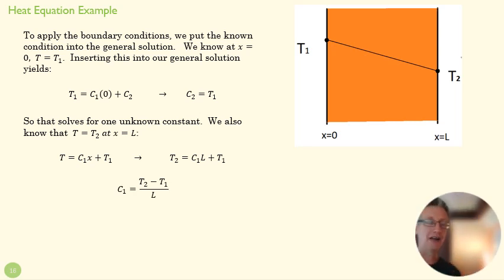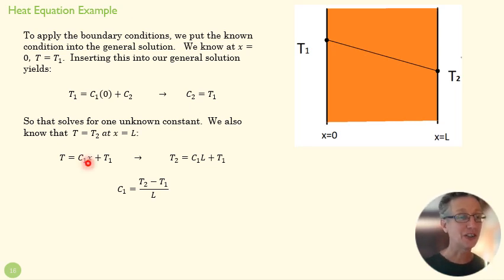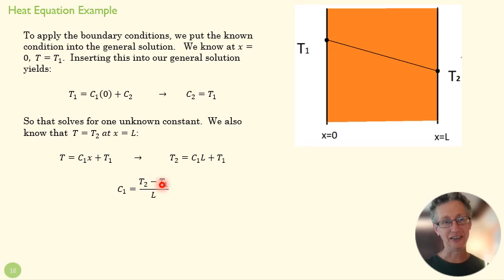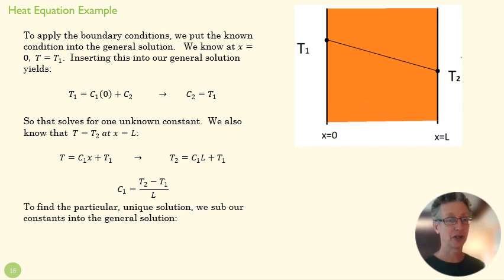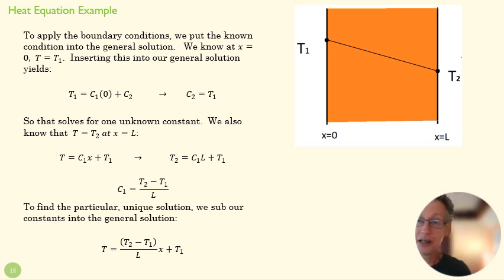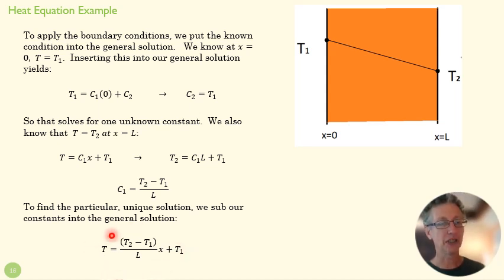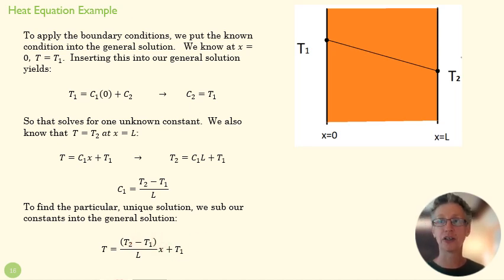We had two constants and we used two boundary conditions to find them. C1 is (T2 - T1)/L — that makes a lot of sense: it's the slope of the line, which is delta T divided by delta X. We substitute those now-known constants into our equation, and we have our particular solution. Given T1 and T2 as our boundary conditions, we now have a particular unique solution to this heat equation problem.